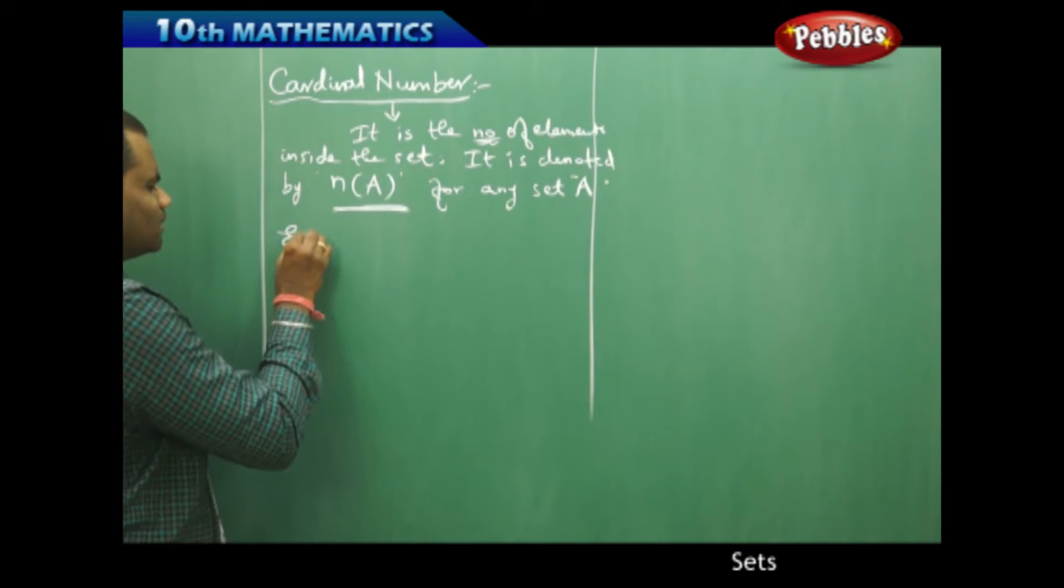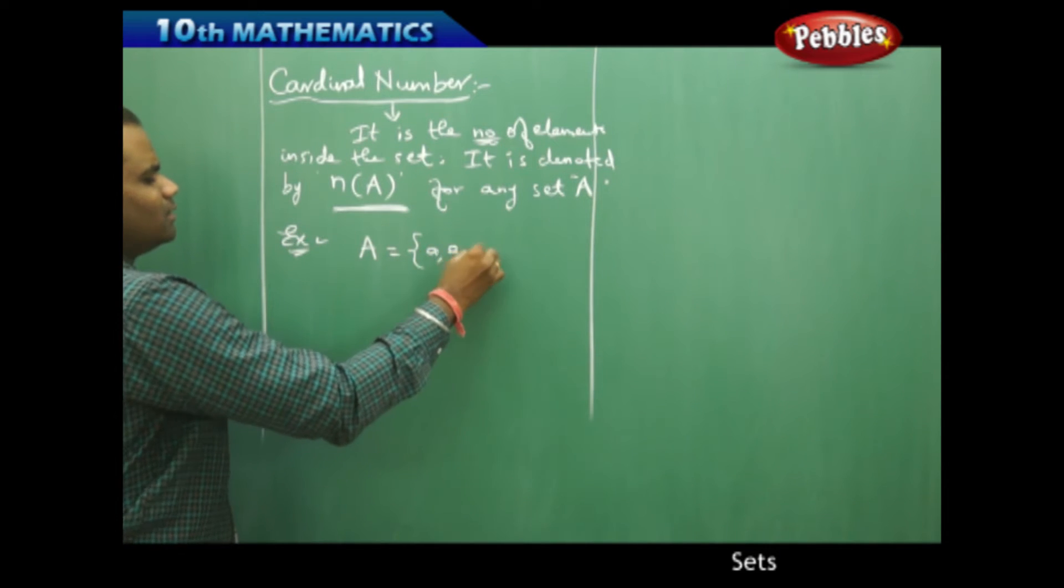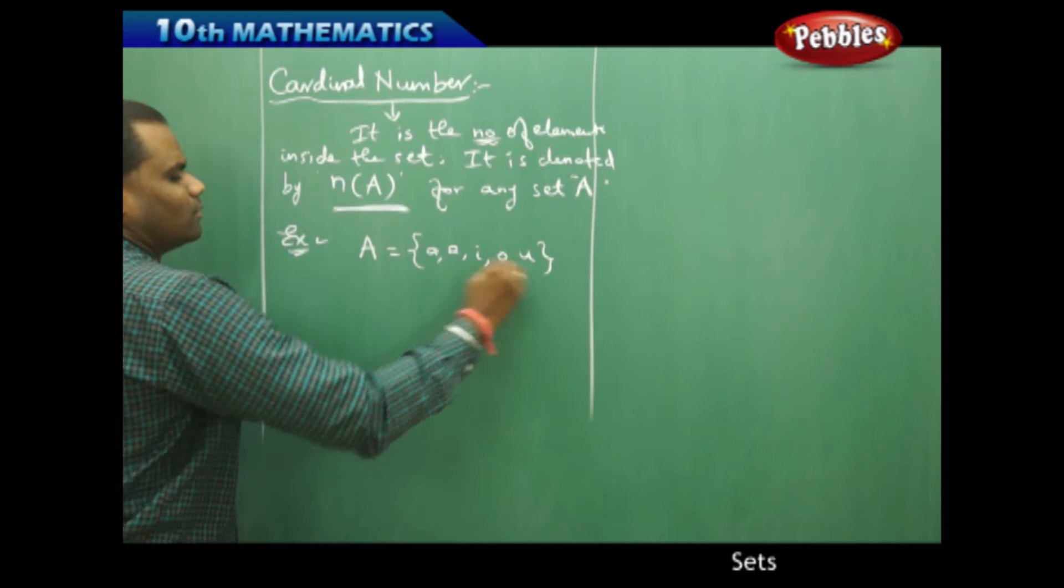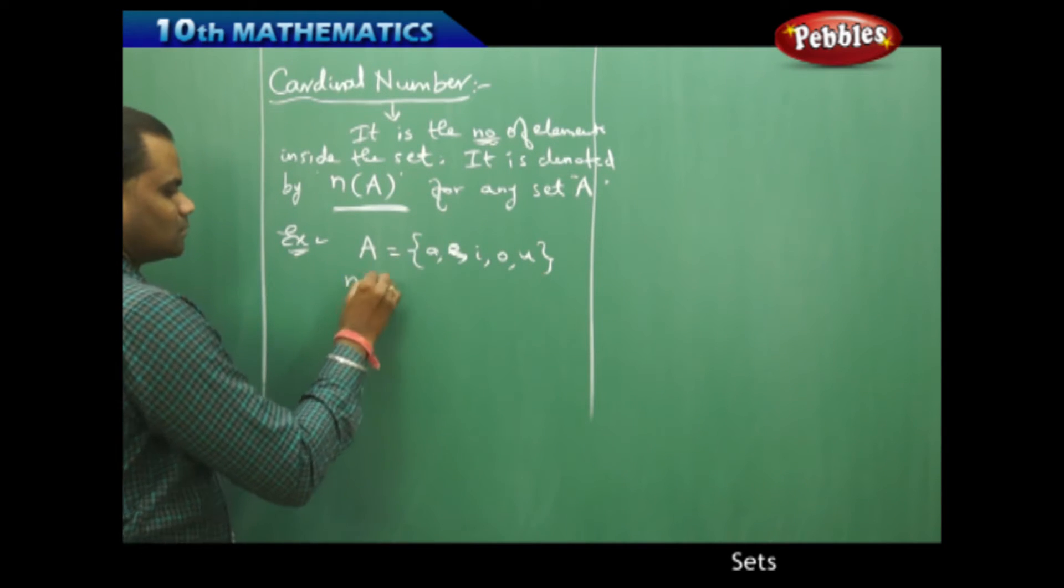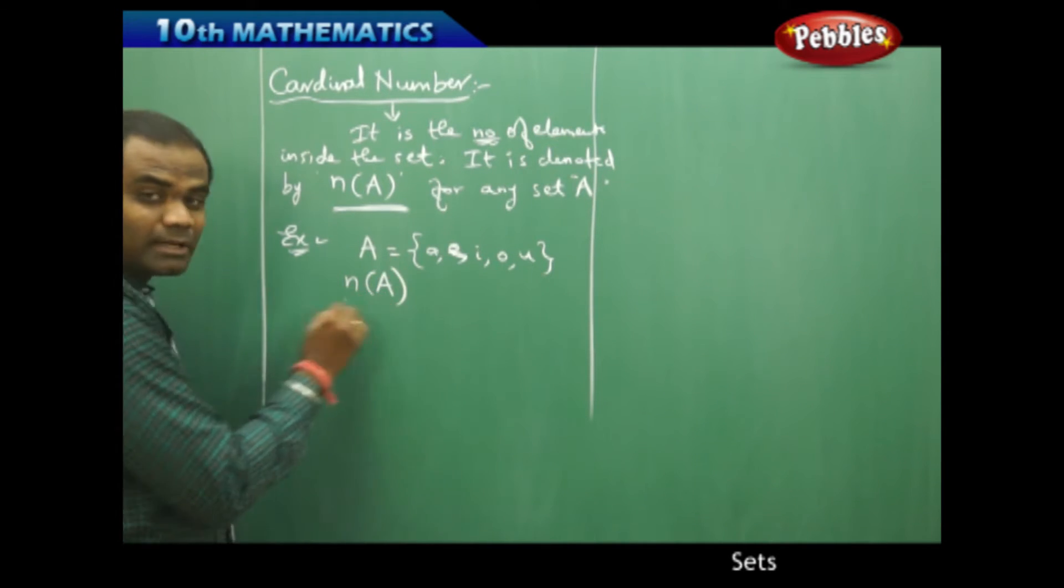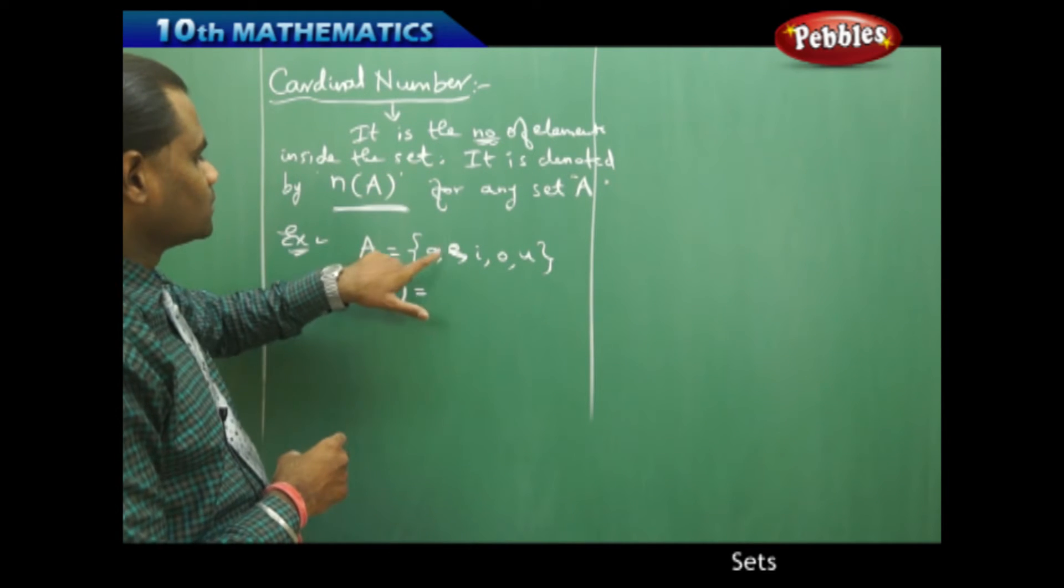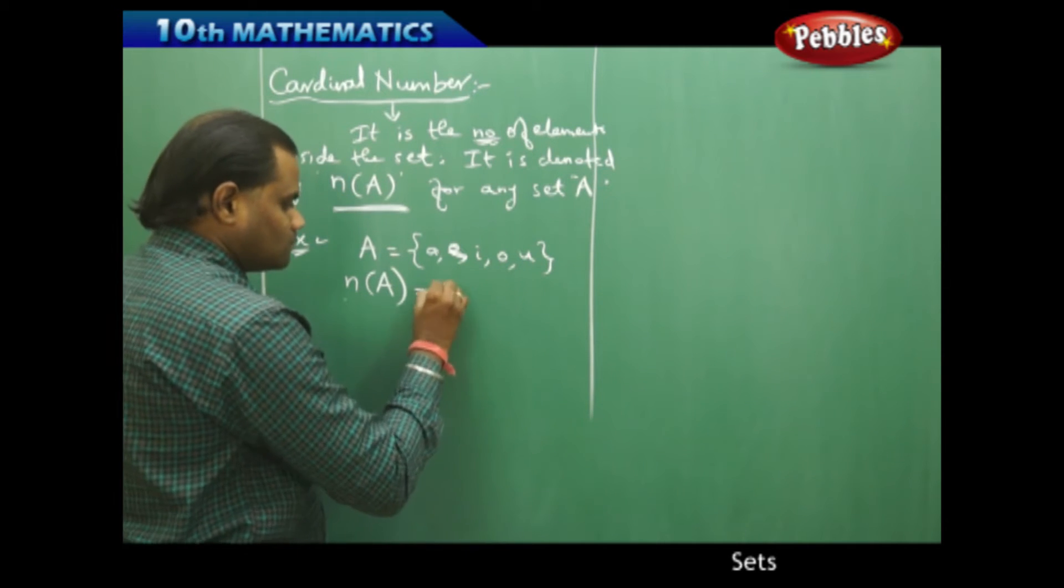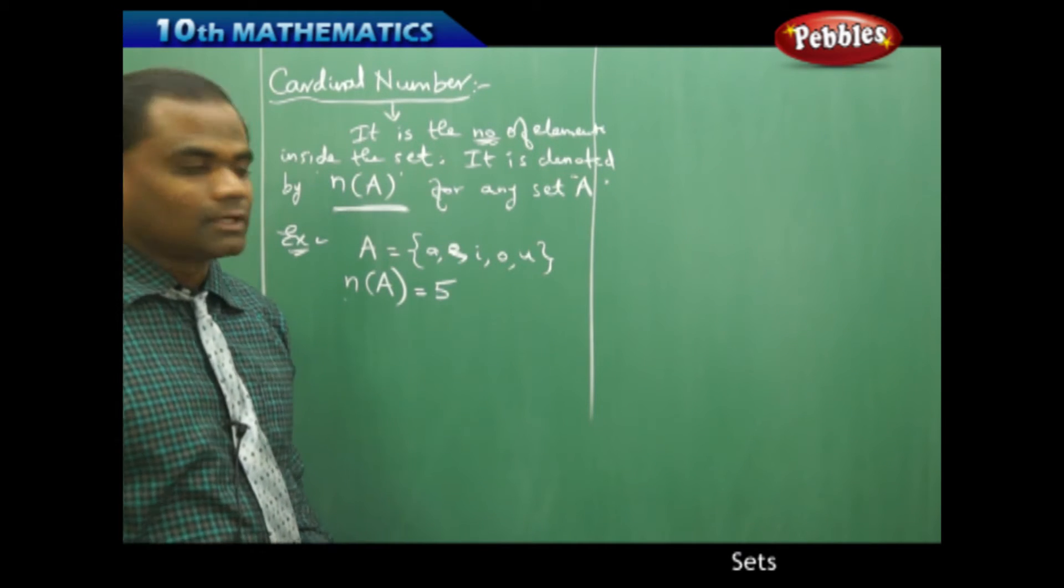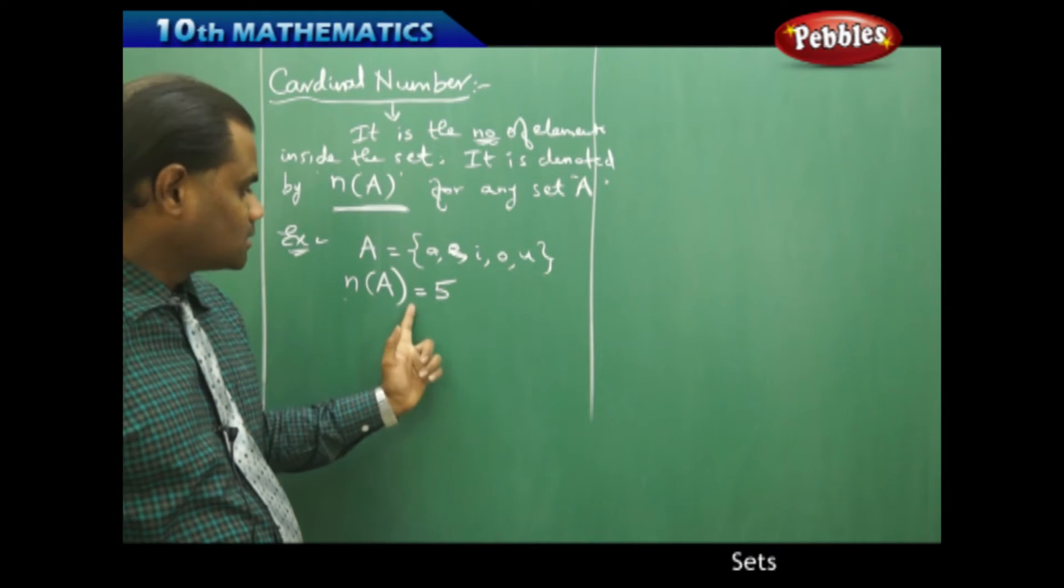For example, I take A equals {a, e, i, o, u}. Then my cardinal number for this set, denoted by n(A), is the number of elements inside the set: 1, 2, 3, 4, 5. So the answer is 5. The cardinal number of set A consisting of all vowels is 5.